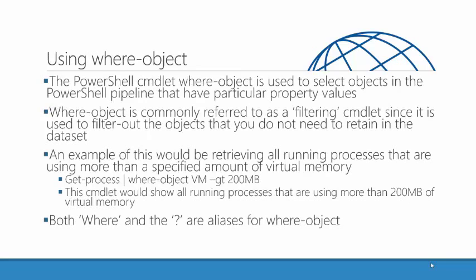The Where-Object cmdlet is sometimes referred to as a filtering cmdlet. Where-Object is there to allow us to examine objects, look at properties that we define, and decide if those objects meet the criteria that we're looking for. In other words, do I want to see those objects in my output, or do I want to get rid of those objects? They didn't meet my criteria.